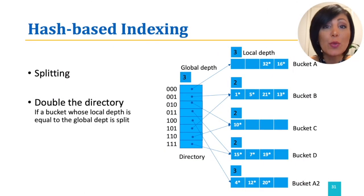To add entry 20 to full bucket A, we split the bucket, add bucket A2, and update the size of the directory to double the previous size. This increases the global depth to 3.